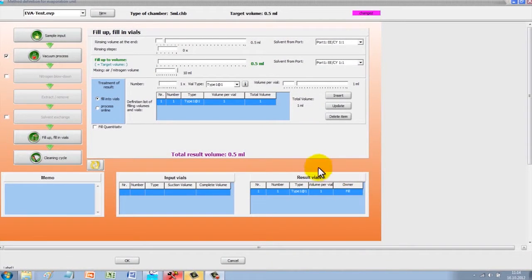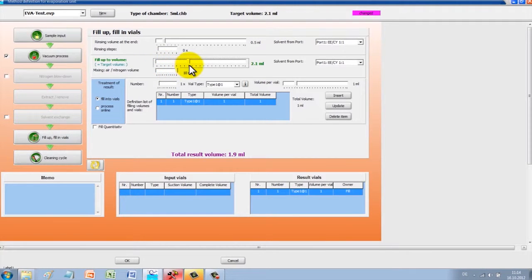The software allows you to select an end volume of between 0.5 and 5 milliliters. This will be saved in the method, and may differ from sample to sample, even within a sample sequence.